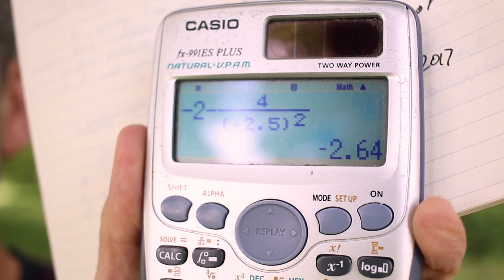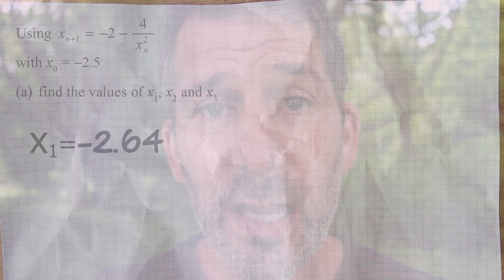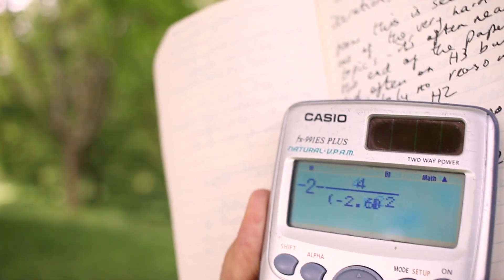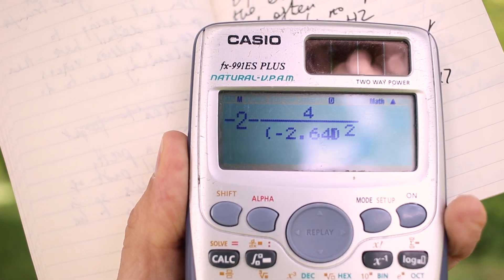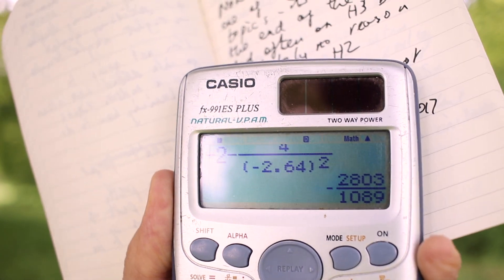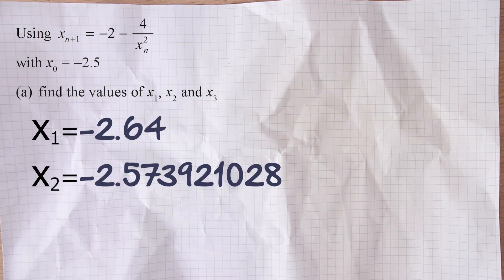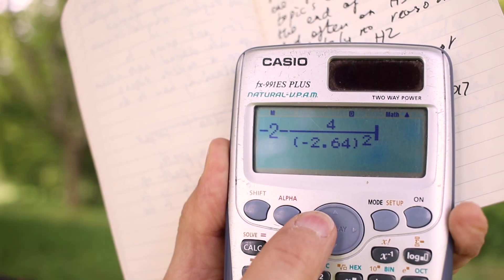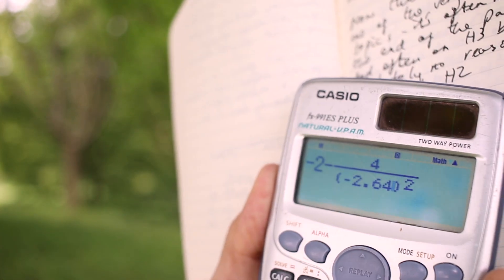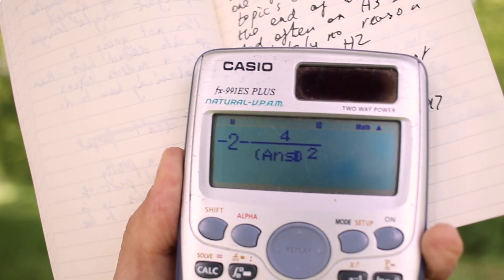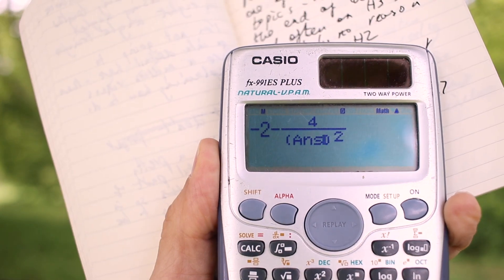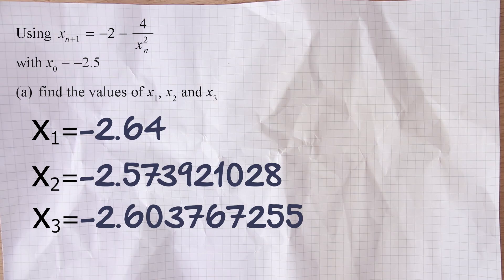That's x_1. For x_2, go back and replace -2.5 with the answer you just got, -2.64, type that in, hit equals, and that gives your second answer. For x_3, instead of typing the long decimal, use the ANS button — that puts in the previous answer automatically. Press equals and you get the final value. That's three marks for that part of the question. You're just substituting numbers into a formula, then substituting your answer back into the same formula, and repeating — that is iteration. Not as bad as it might first appear.